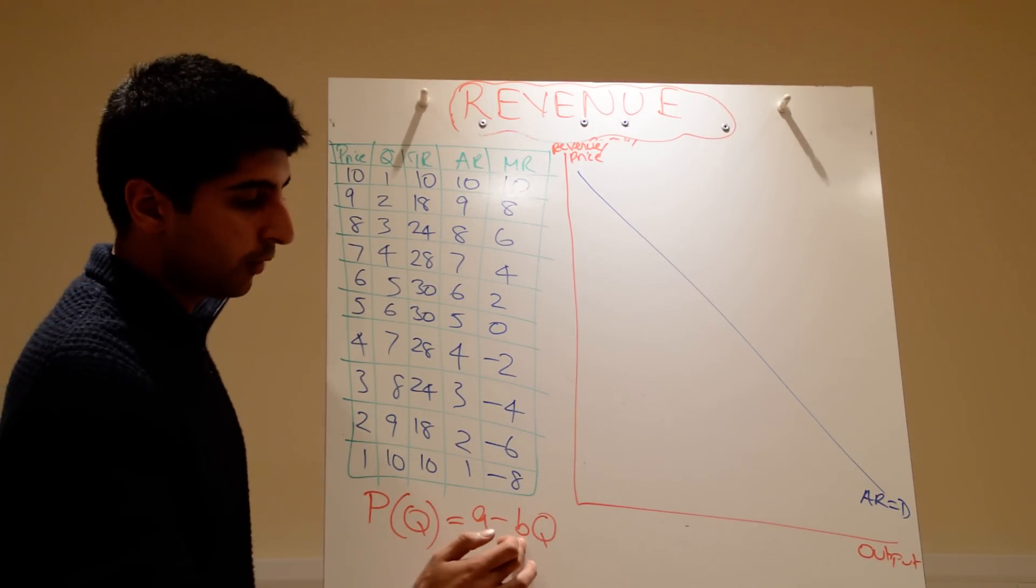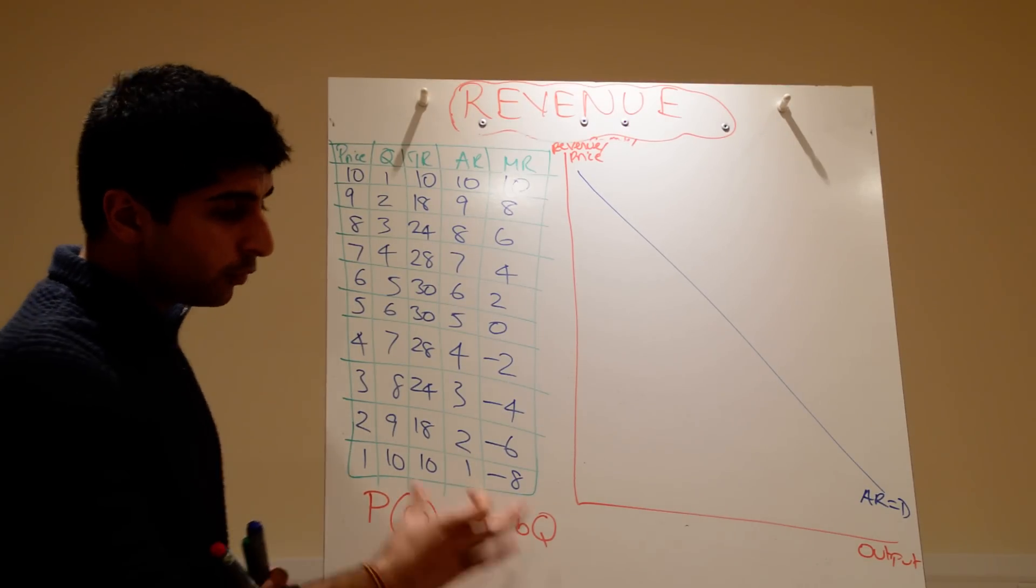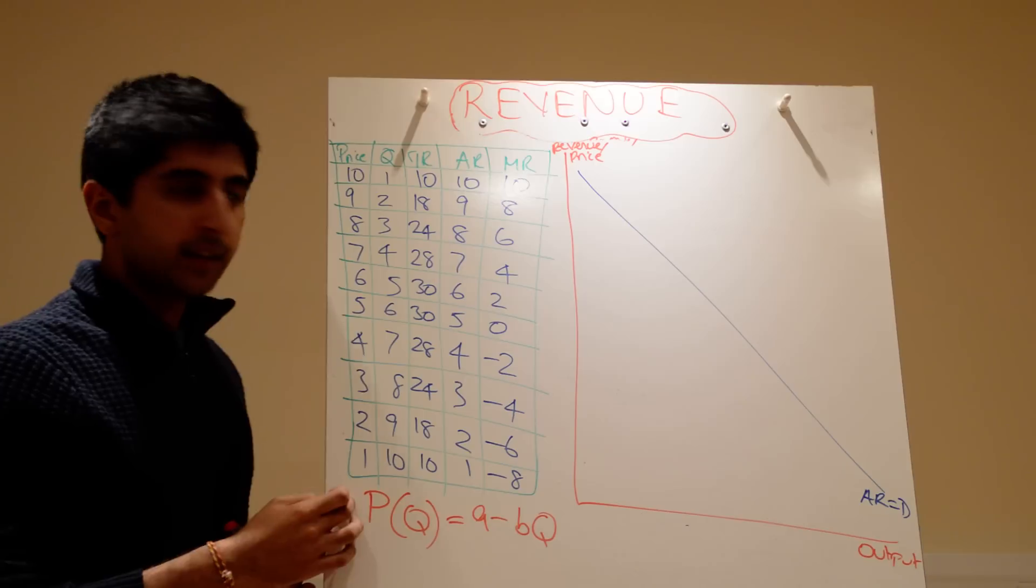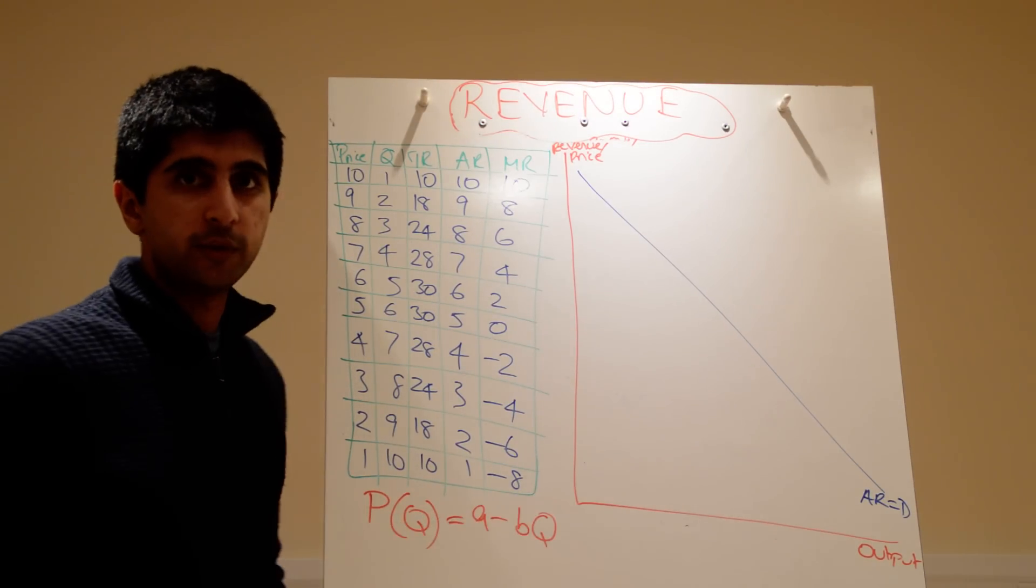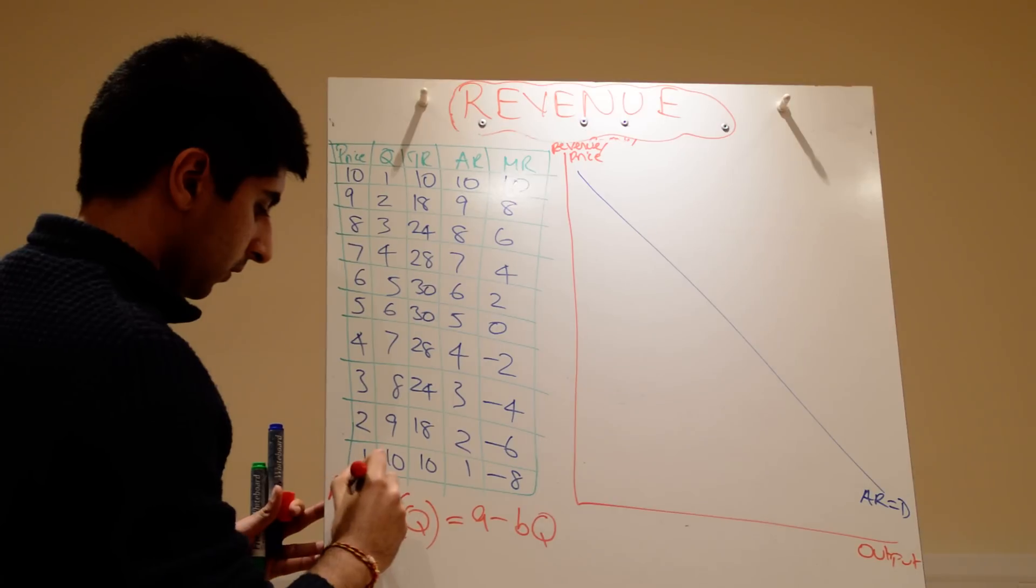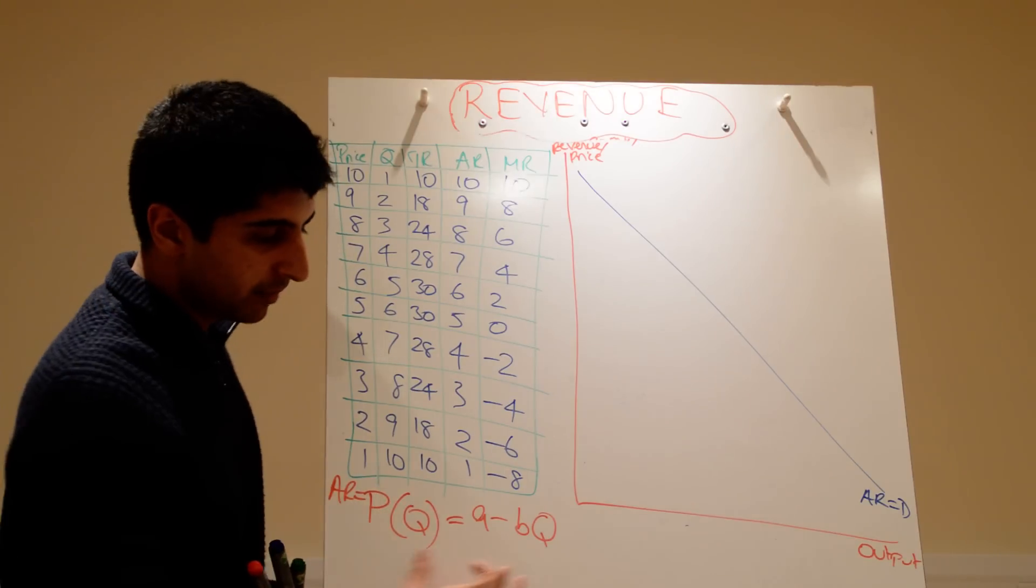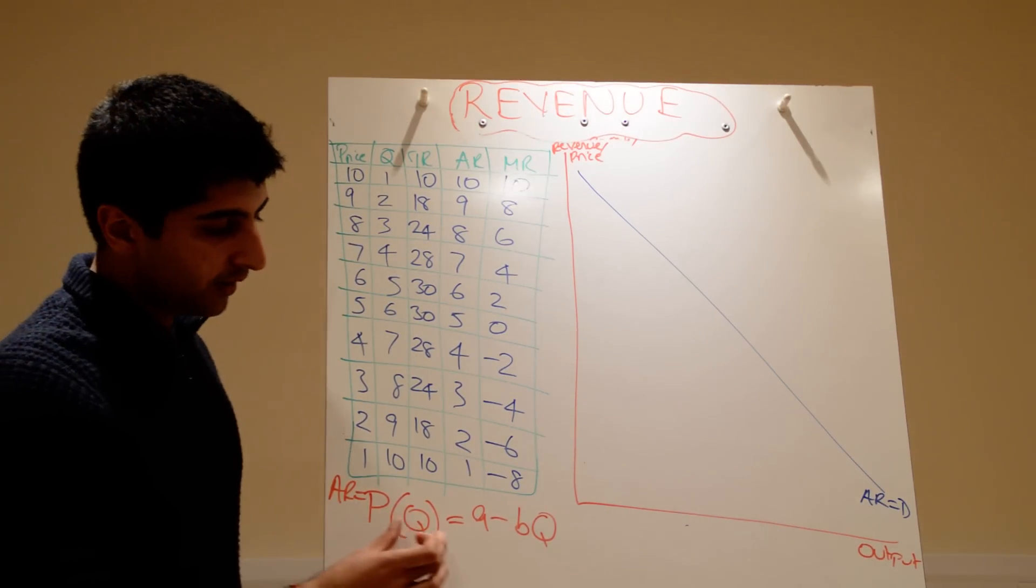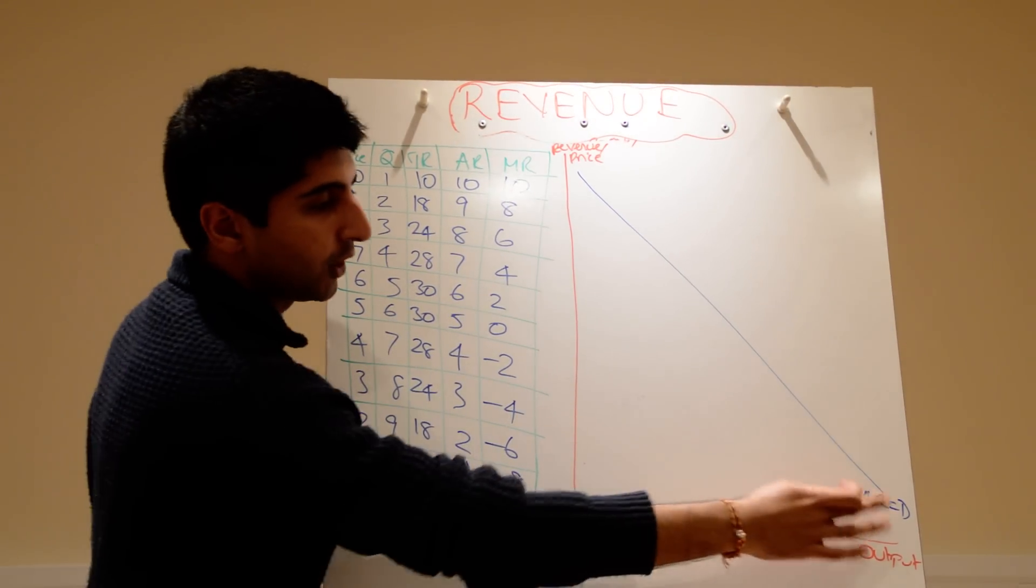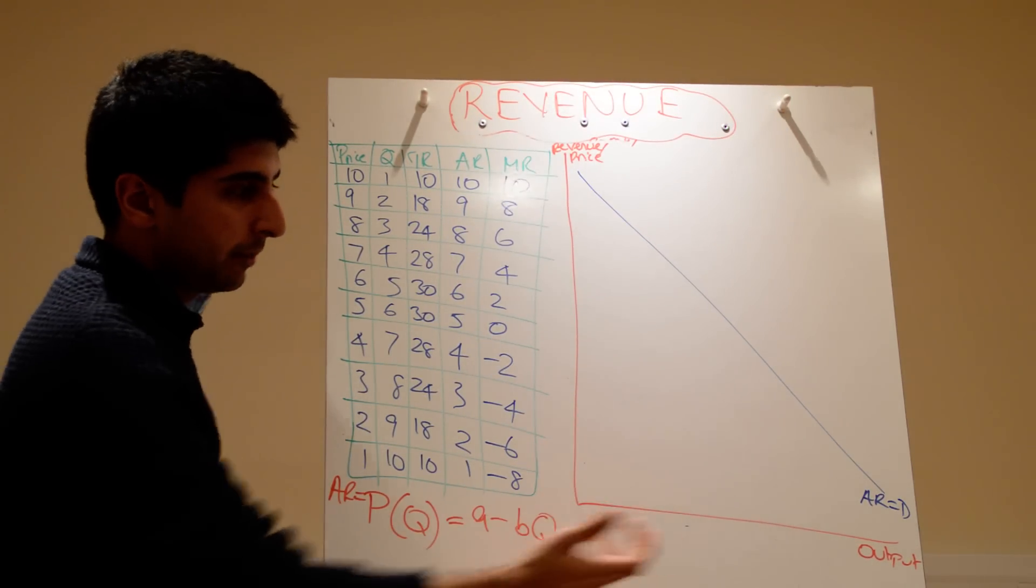Now, if we believe that to be the case, if we understand that to be a demand equation, and we also understand that price is our AR. Price is average revenue based on what we just derived. Well, then surely, that average revenue is also equal to this equation, which is our demand equation. If that's the case, well, that average revenue must be demand as well. If price gives us demand equation, average revenue also gives us this demand equation. So average revenue is also the demand curve. So that's why we say AR is equal to D. It's also equal to P based on what we said before.